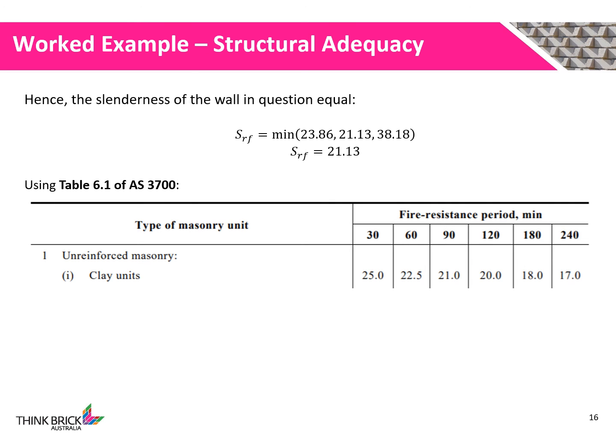Using Table 6.1 of AS 3700, the structural adequacy period of the wall can be determined. Our wall cannot meet a 90 minute fire resistance period, as its slenderness ratio exceeds the maximum allowable of 21.0. Hence, our structural adequacy value is determined to be 60 minutes.